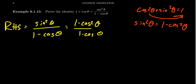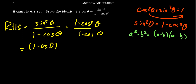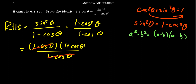One minus cosine squared is a difference of squares — you have one squared, which is one, and cosine squared. So this looks like a squared minus b squared, which equals a plus b times a minus b. We can factor the numerator using a difference of squares, giving us one minus cosine theta times one plus cosine theta, all over one minus cosine theta. The one minus cosine theta cancels out, and you're left with just one plus cosine theta, which is the left-hand side. So we've proven this identity.